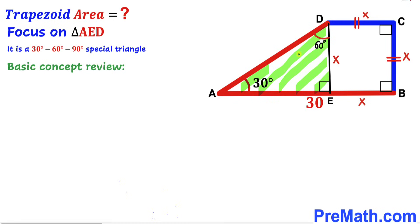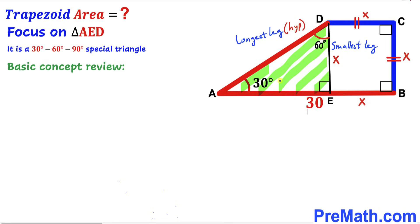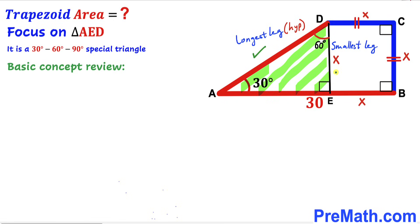In triangle AED, 30 degrees is the smallest angle and 90 degrees is the largest. The side opposite the smallest angle is the smallest leg, and the side opposite the largest angle is the longest leg (hypotenuse). In a 30-60-90 triangle, the longest leg is always twice the smallest leg. Since the smallest leg is x, the longest leg is 2x and the third leg is x√3.